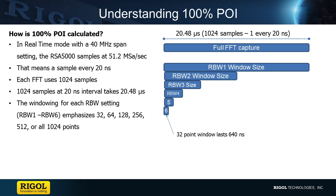There's also an RBW setting, which effectively is a window size. For POI, the most important one is the smallest window. In this case, that's RBW6, which is a 32-point window. 32 points at 20 nanoseconds lasts just 640 nanoseconds.